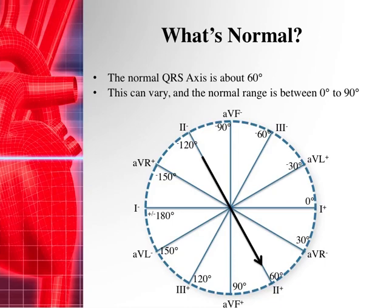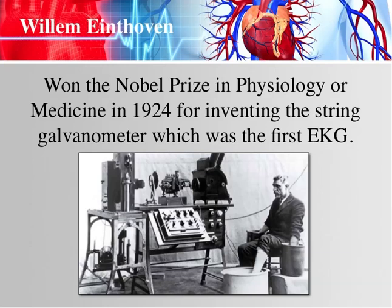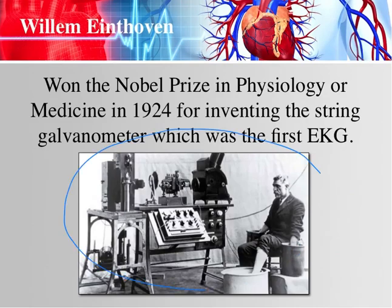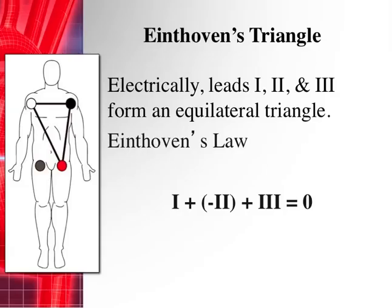Willem Eindhoven is the guy we should all thank for discovering the EKG. He won the Nobel Prize in physiology or medicine in 1924 for inventing the string galvanometer, which was the first EKG. In the picture you can see his hands and foot immersed in water, and that gave him leads one, two, and three — which we still call the limb leads to this day. Eindhoven's triangle is considered an equilateral triangle, and you can see leads one, two, and three forming that triangle.